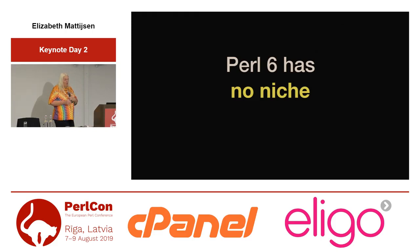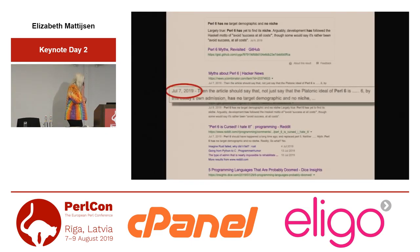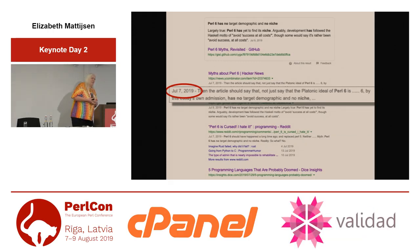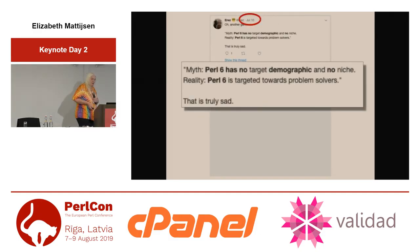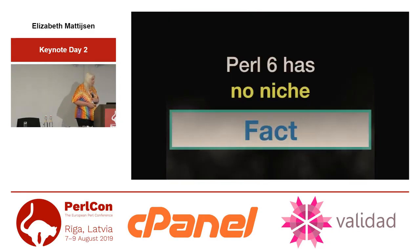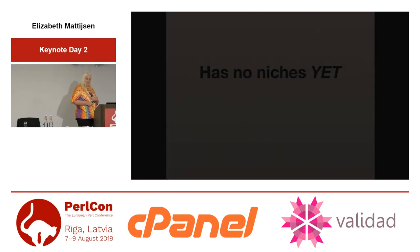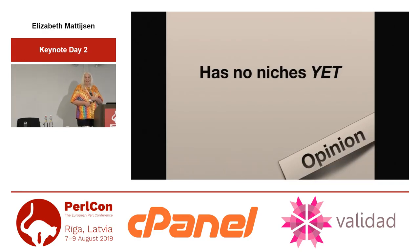Perl 6 has no niche — that myth is Dutch, or rather very much alive. No target demographic, no niche — I would say that's a fact. I would also say we don't have any niches yet. Is it web scale? Well, if Mongo is, yes.